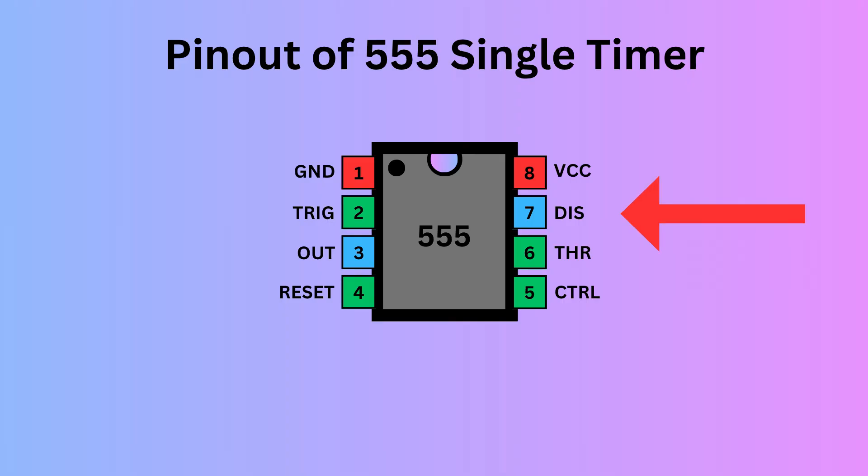Pin 7 is discharge. It controls the charge and discharge cycle of the timing capacitor. Pin 8 is VCC. It is responsible for supplying the power to the IC.